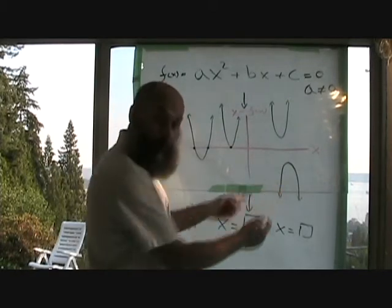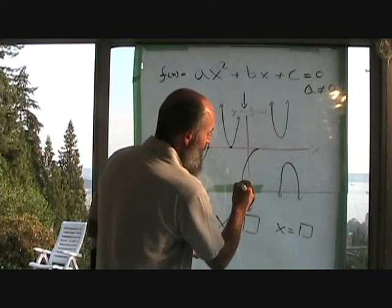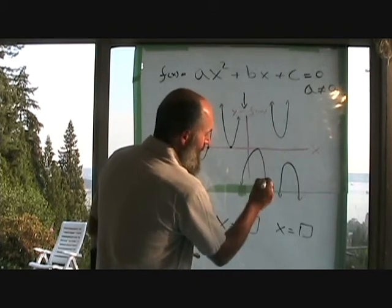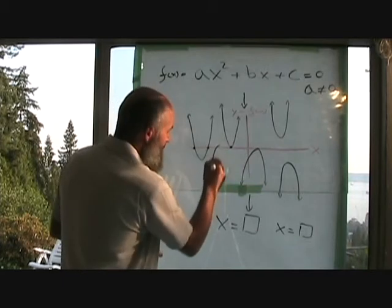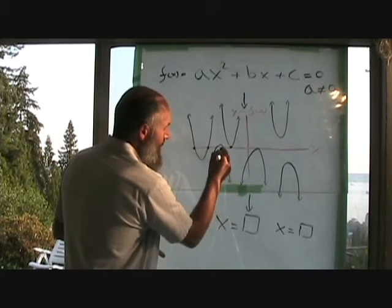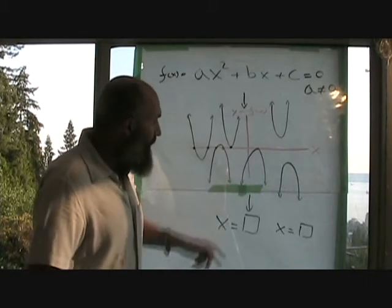This one would be a quadratic equation opening down with no solutions because it doesn't cross the x-axis. This would be a quadratic equation opening down with one solution, one x-intercept. Or this could be a quadratic equation with two x-intercepts, two solutions.